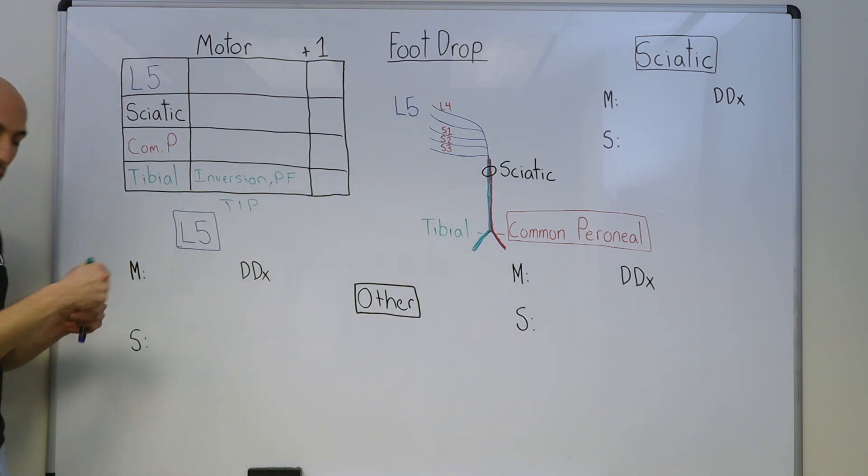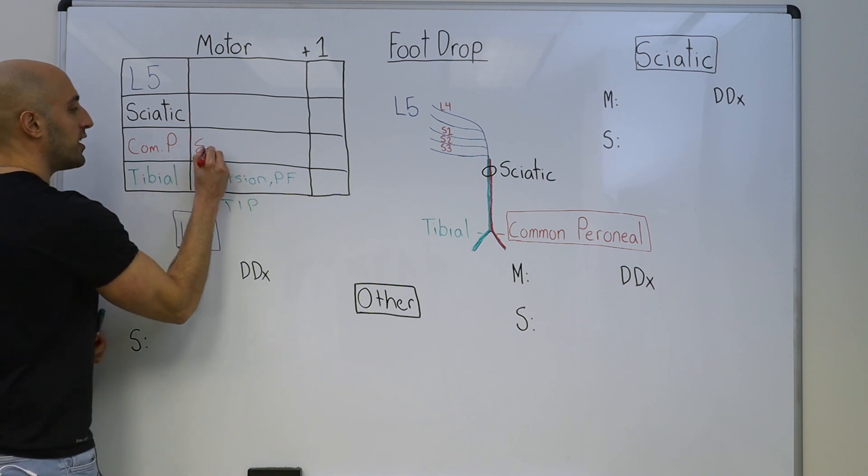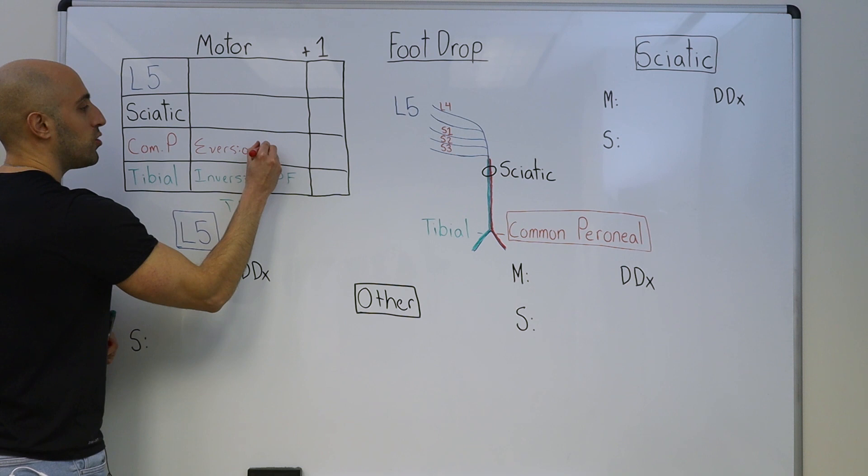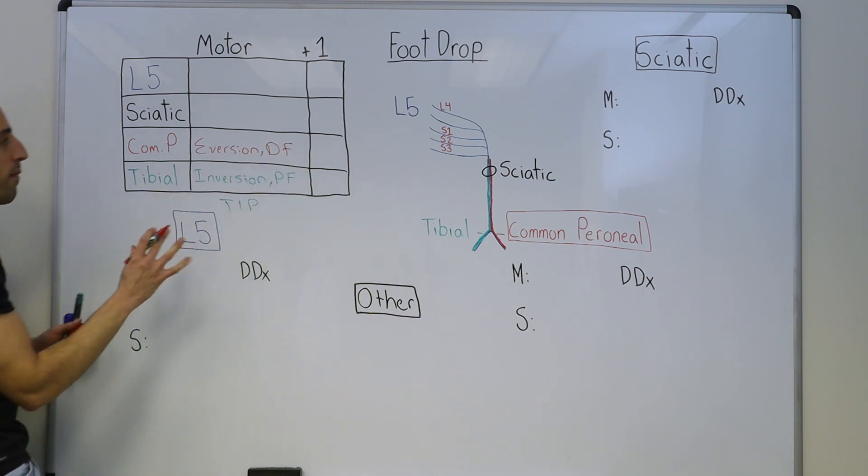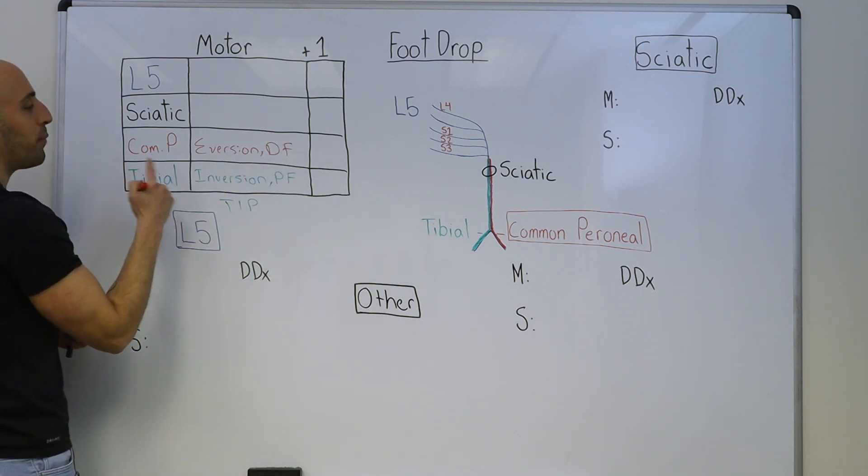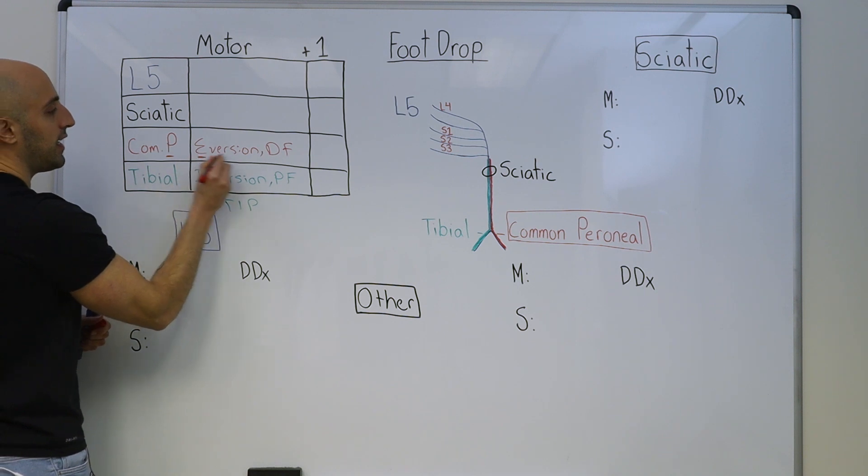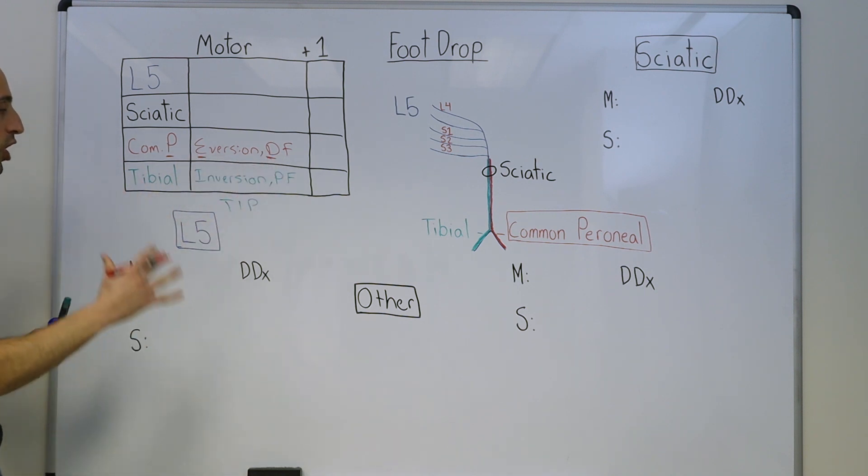The common peroneal nerve is responsible for eversion or outward movement of the foot and dorsiflexion. We remember this with the mnemonic PED, P-E-D. So peroneal, common peroneal, eversion, dorsiflexion.